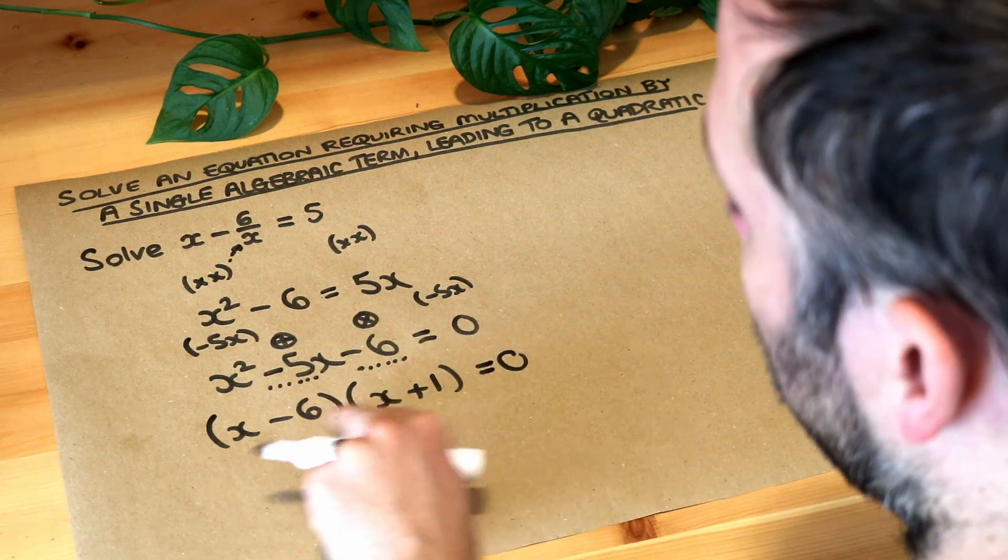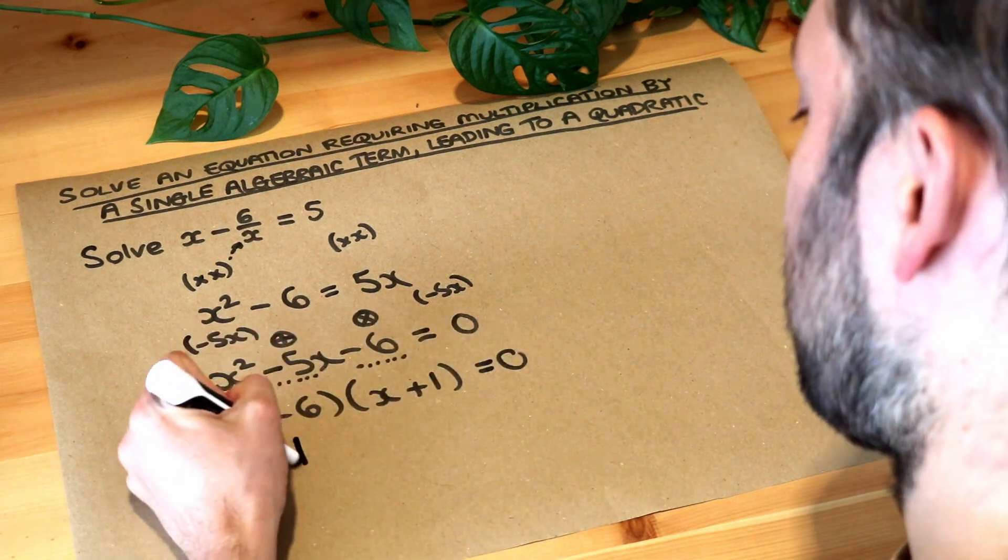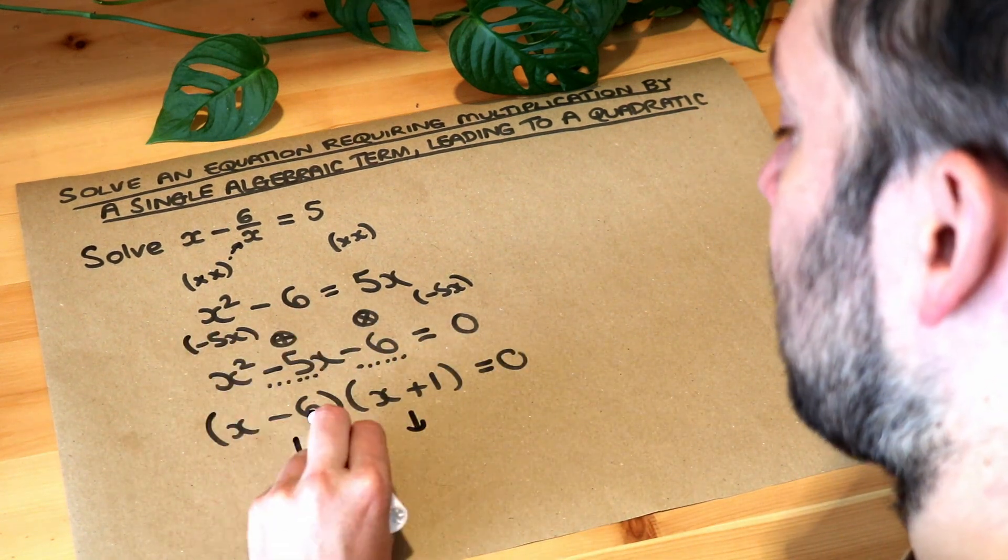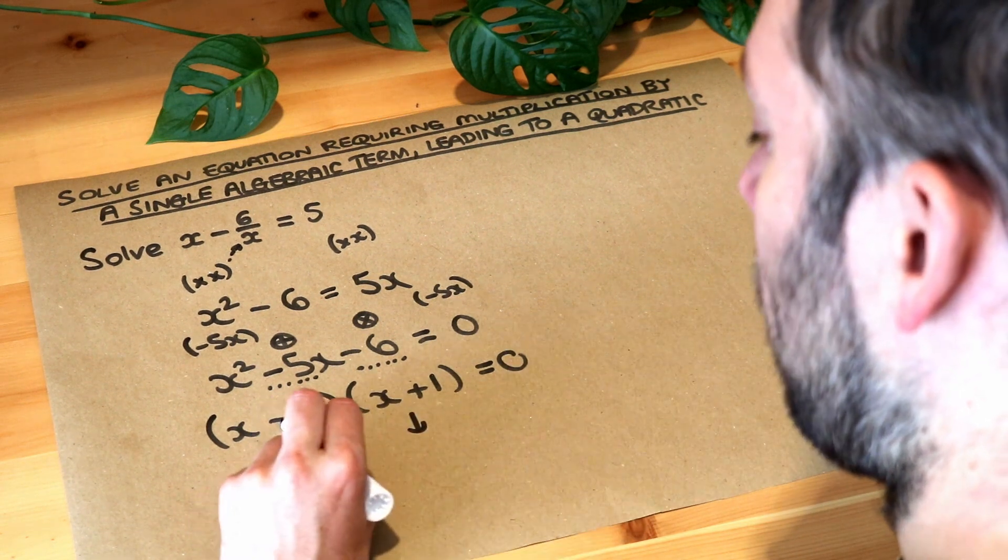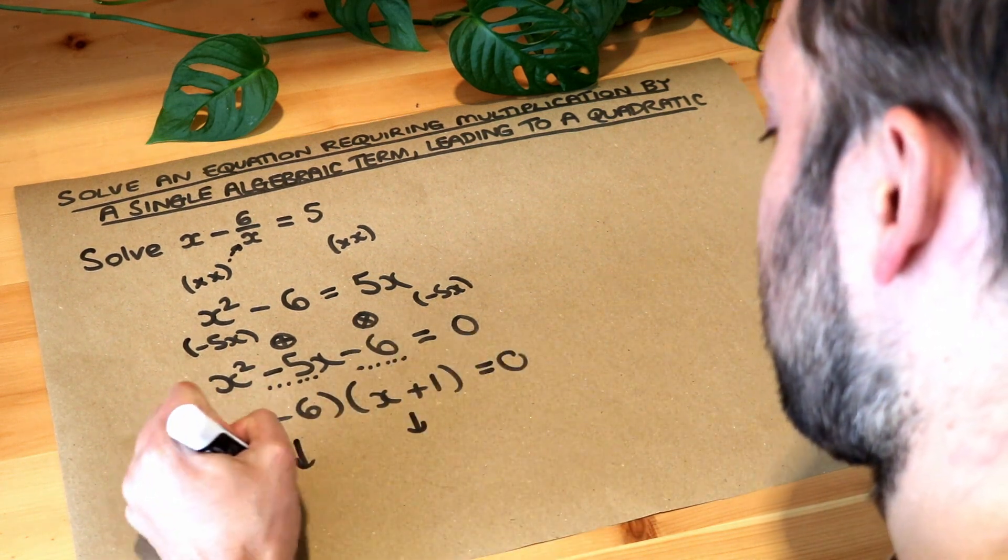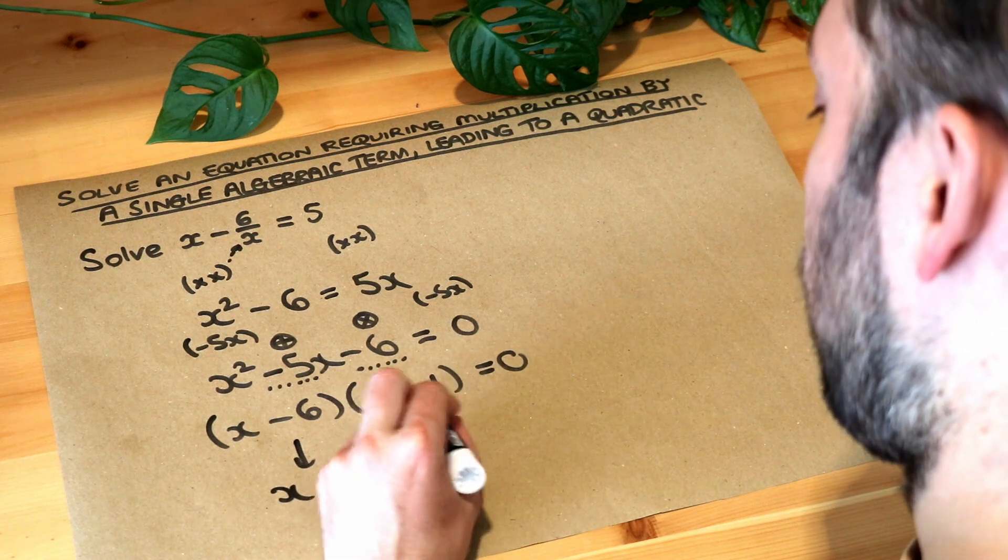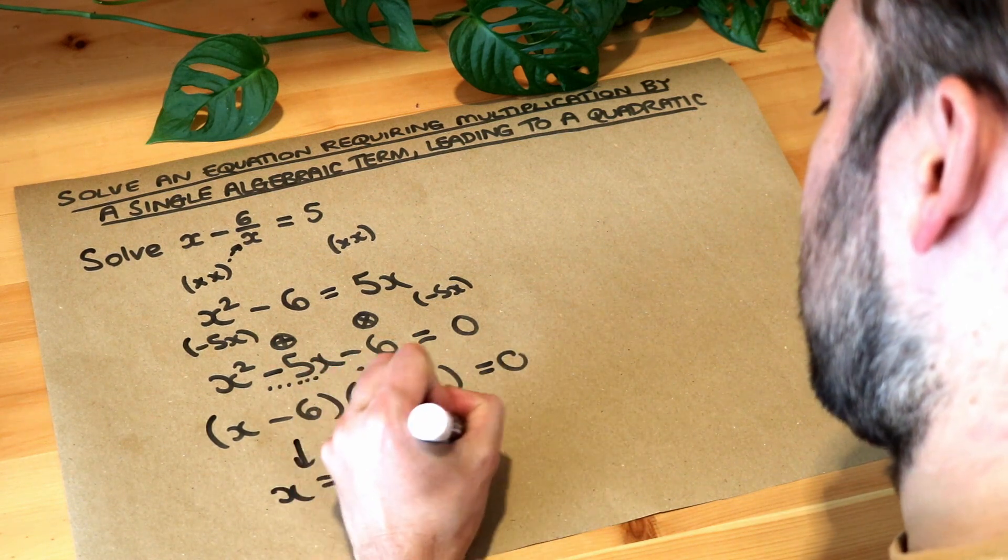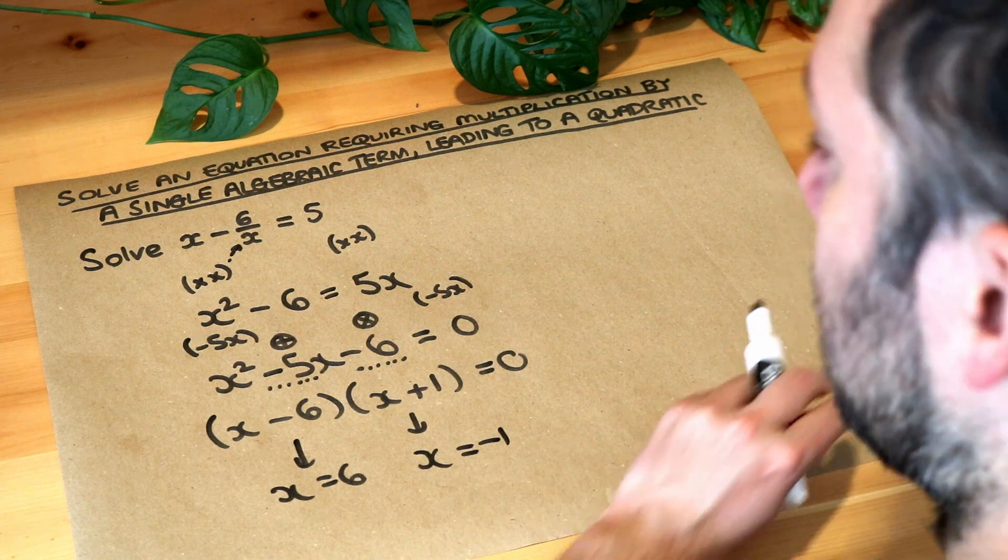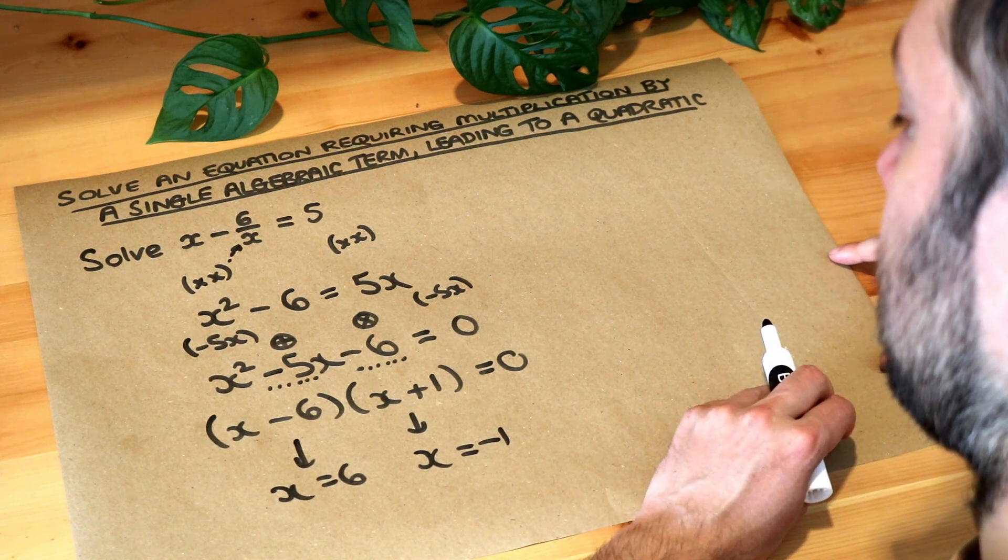And then we say well we've got a product of two things equal to zero. Either x minus 6 is zero. What minus 6 is zero? Well it's 6. Or x plus 1 is zero. What plus 1 is zero? Well it's minus 1. And those are the final solutions.